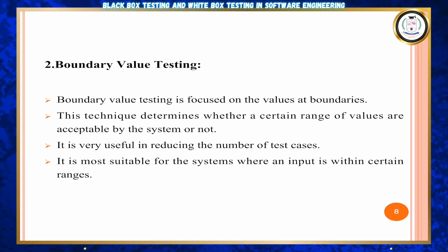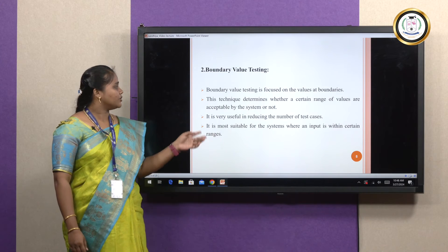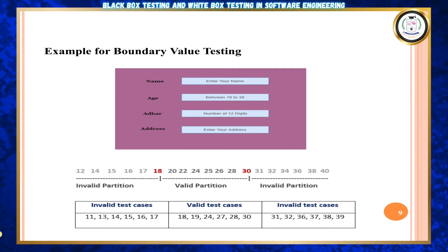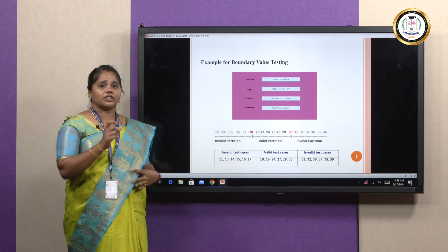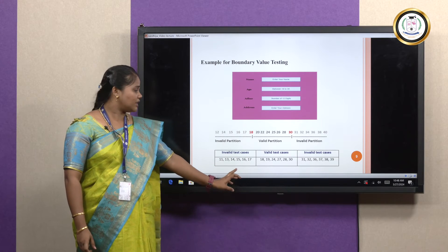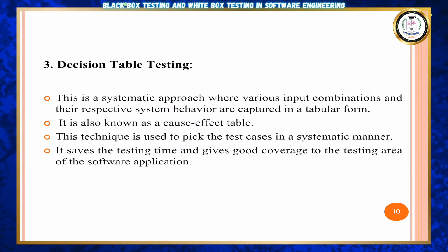Next, boundary value testing. Under boundary value testing, you set boundaries and focus on the values at those boundaries to determine whether the system accepts the input or not, and to reduce the number of test cases. For example, for an age field with a boundary of 18 to 30: values between 18 and 30 are valid, below 18 is invalid, and above 30 is invalid. That is boundary value testing.